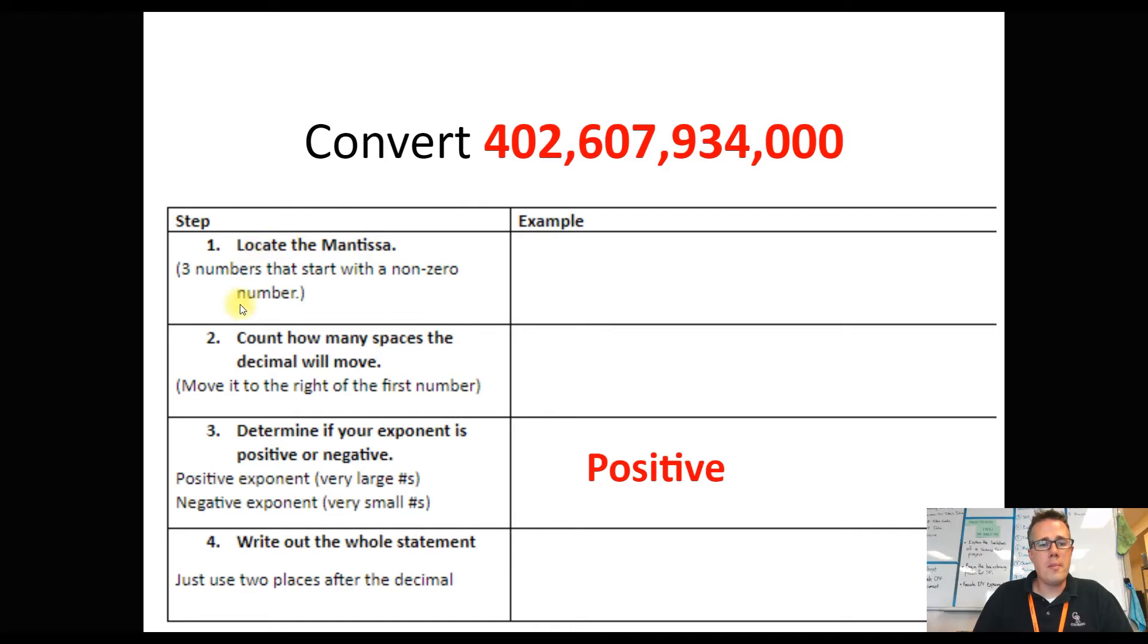Step number one. Step one is to locate the mantissa. Those are the first three numbers. And it's the first three numbers that start with a non-zero. We're going to deal with really tiny numbers that are like 0.0000000 something in just a minute. So this one is a little bit more obvious because it's just the first three numbers. But when we're dealing with small numbers, this first step will be more meaningful. So our mantissa is going to deal with 402. Sometimes scientific notation can keep going, but we're just going to use the first three numbers for this class.